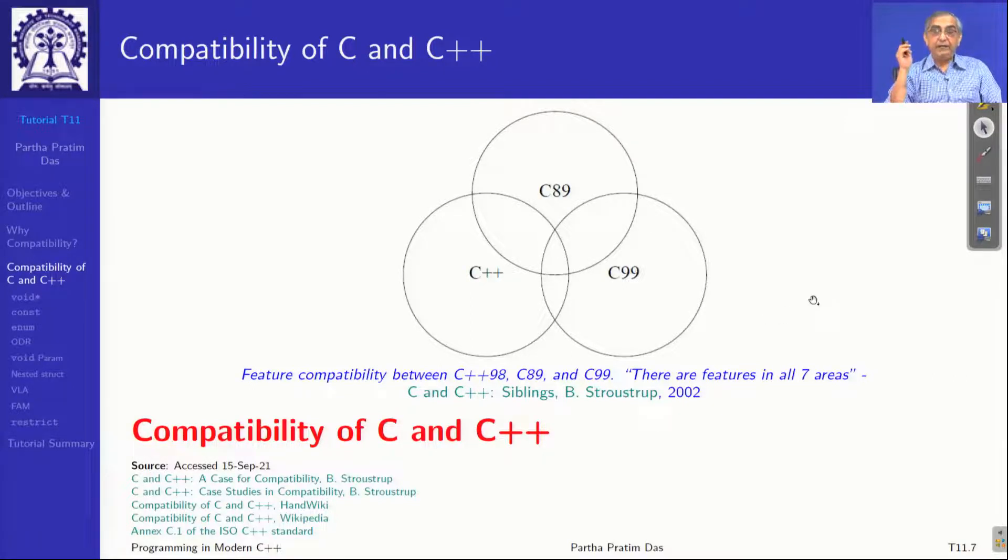Just to give you an idea, there is a Venn diagram of features. C90/C89 is the oldest standard, C99 is the most commonly used standard, and C++98/C++03. If you take these three dialects and draw this Venn diagram, you get seven different regions, and interestingly there are features which fall in each category and have compatibility issues.